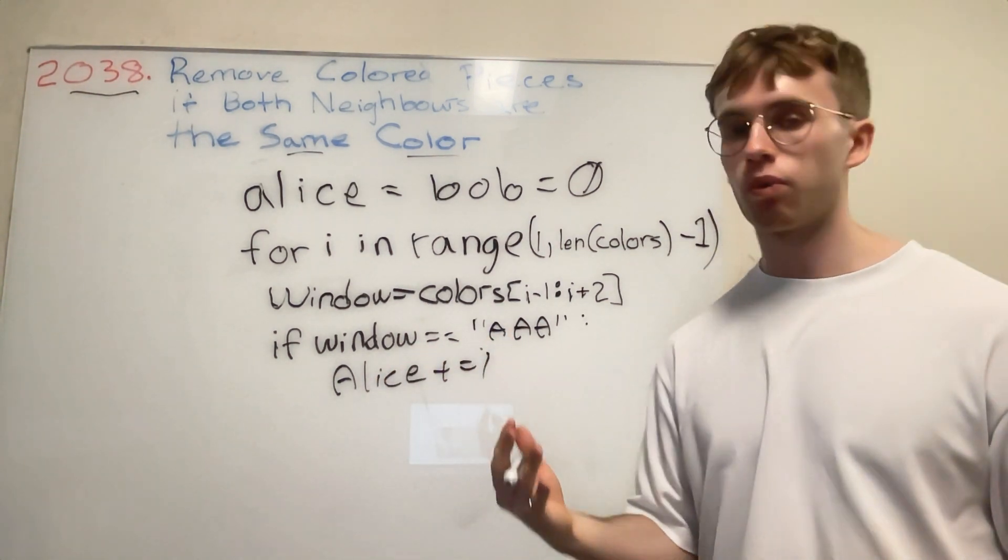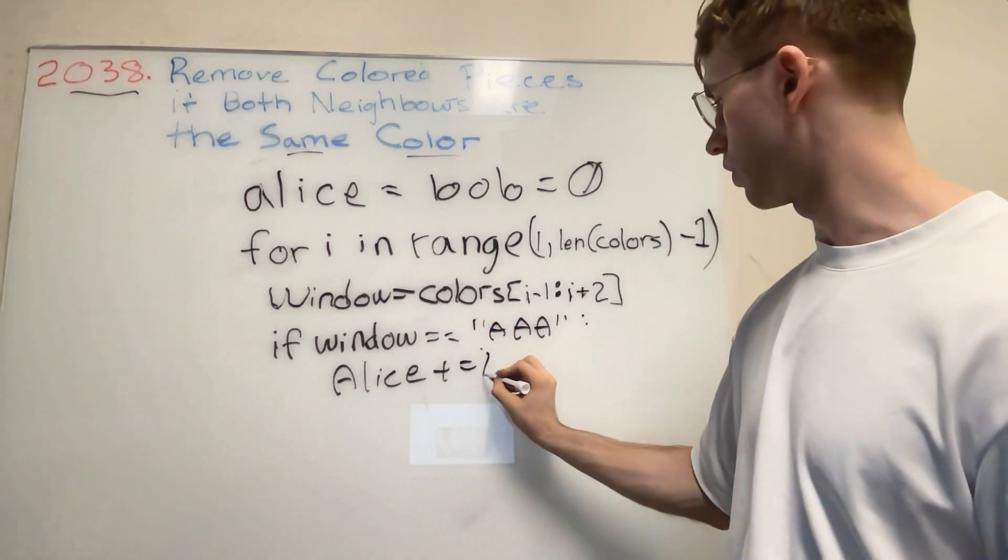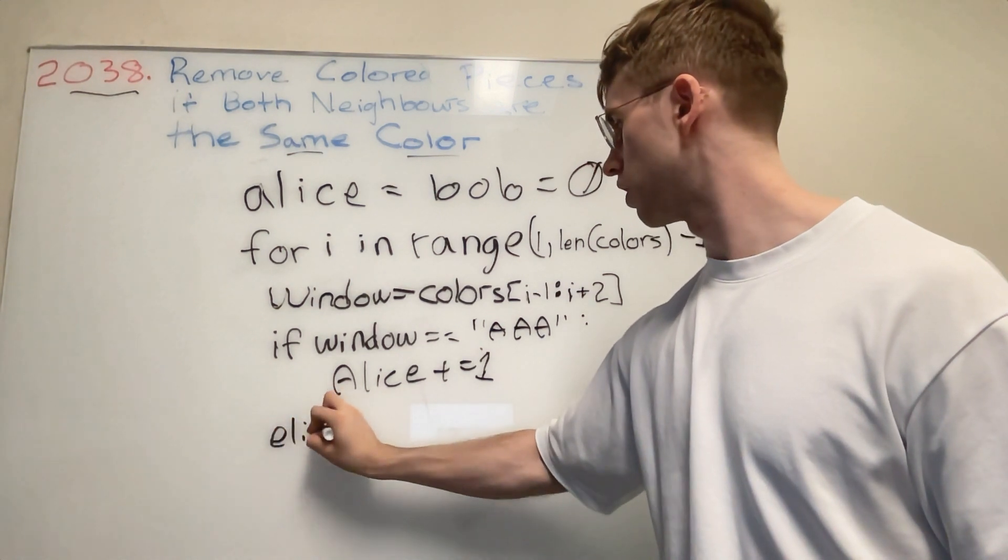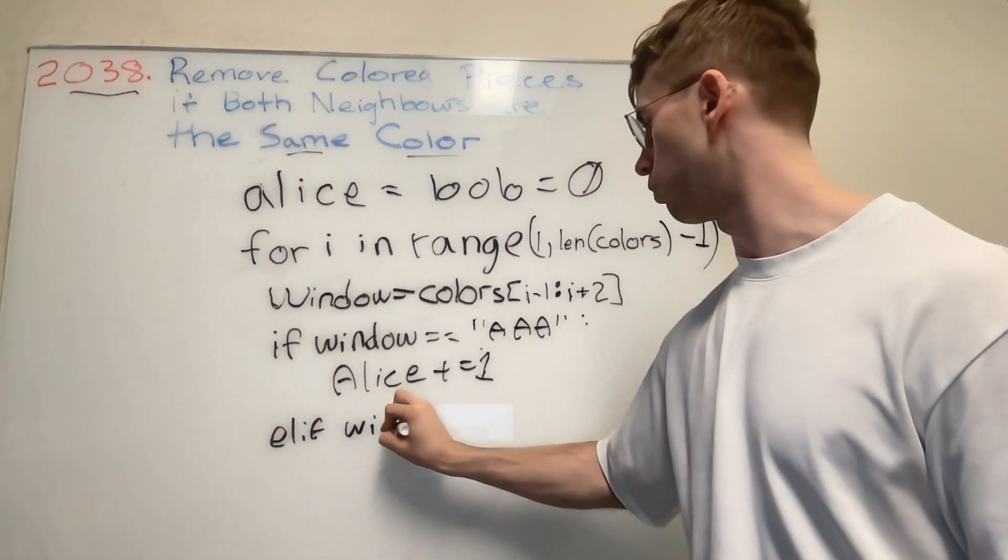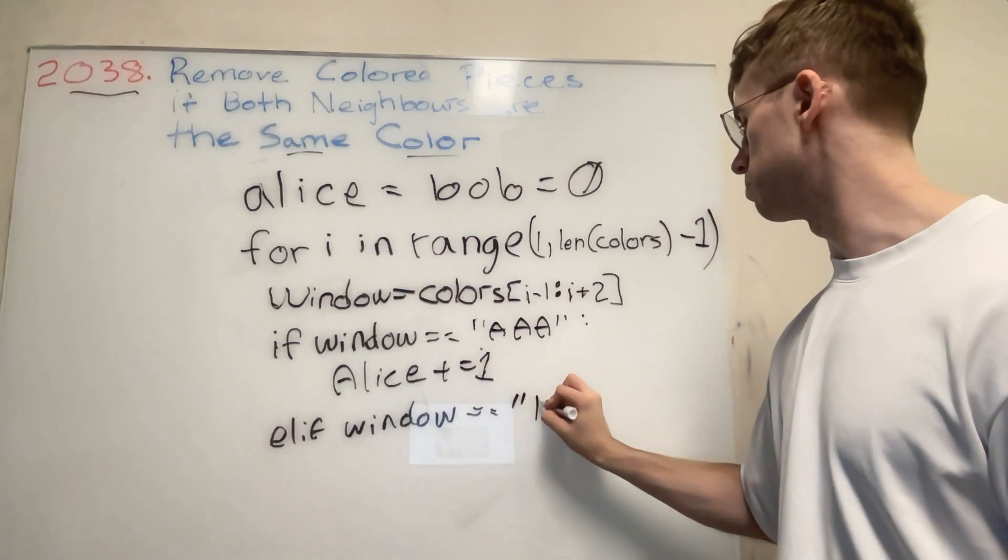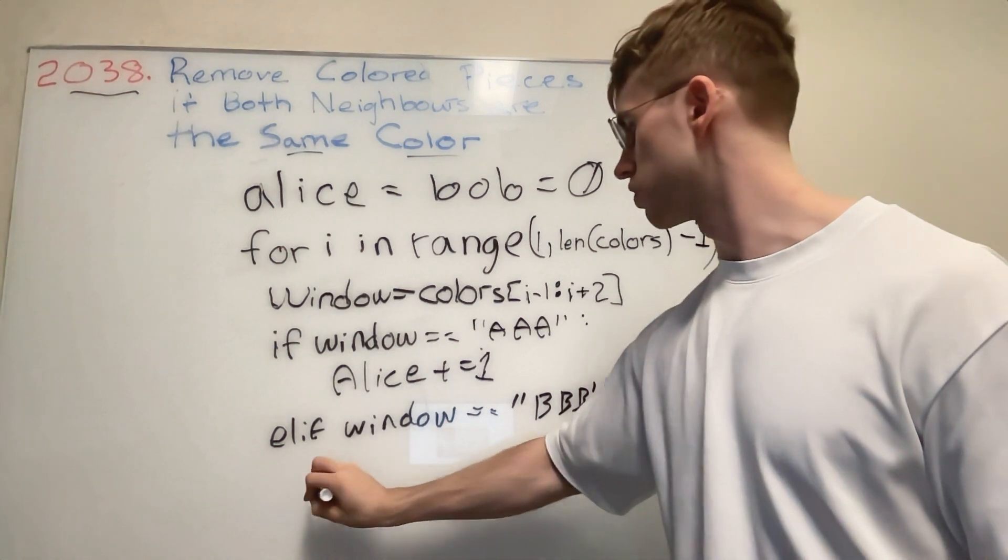Otherwise, if our window is equal to BBB, Bob's going to get a point. So this is adding one for Alice.